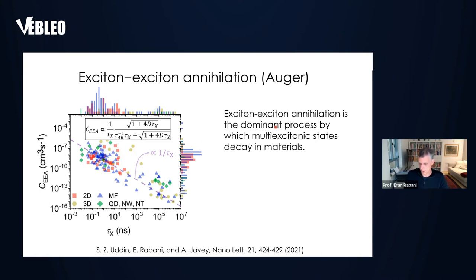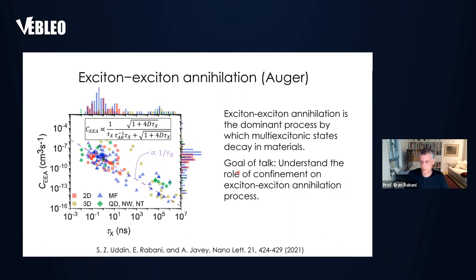If exciton-exciton-annihilation is one of the dominant processes, then we need to get a better understanding of how it behaves, particularly for confined structures. And why do we want to do it for confined structures? Confined structures are very unique in various different ways. First, they confine the excitons. So if we think about the equation given here for an exciton-exciton-annihilation coefficient in terms of tau_x, the radiative lifetime,